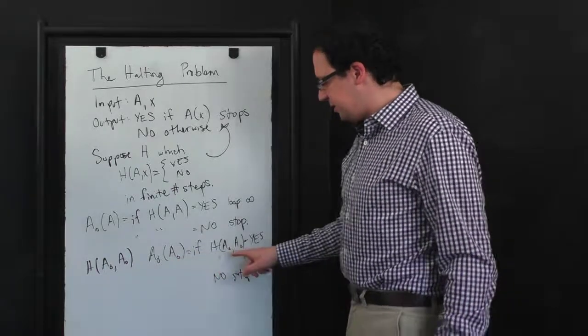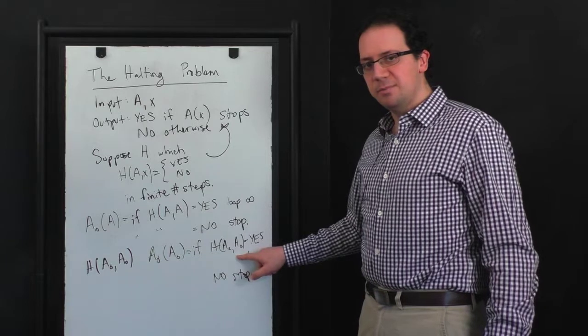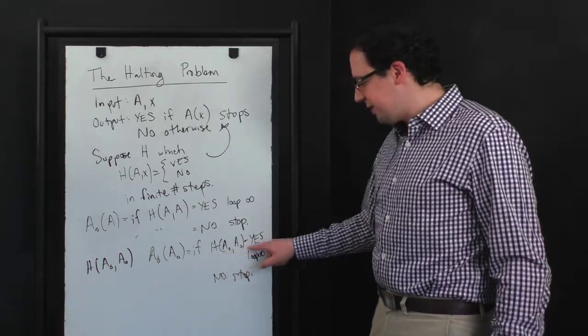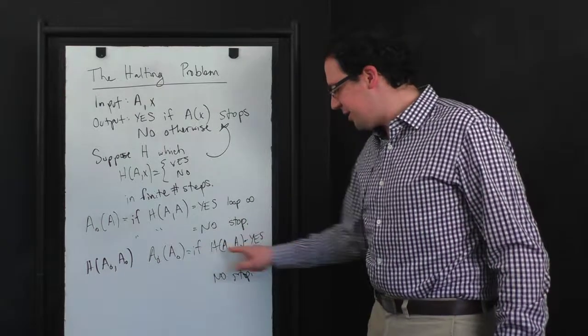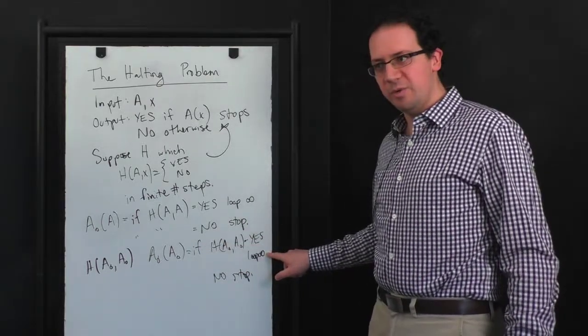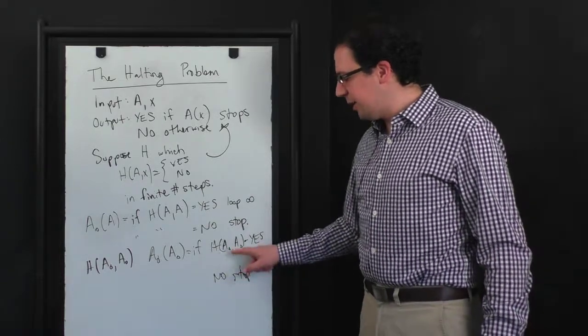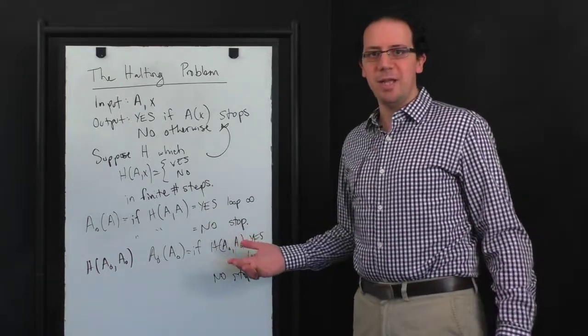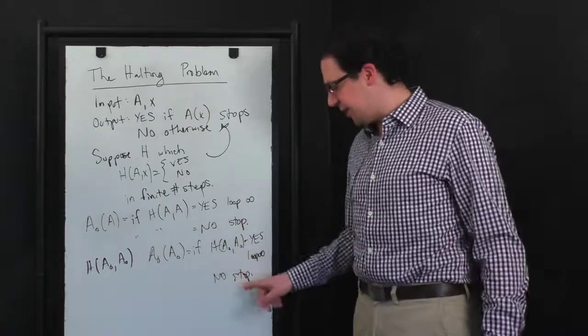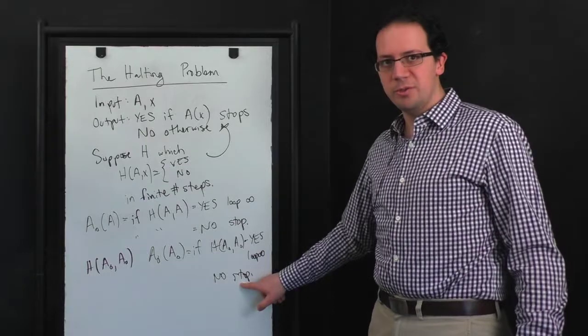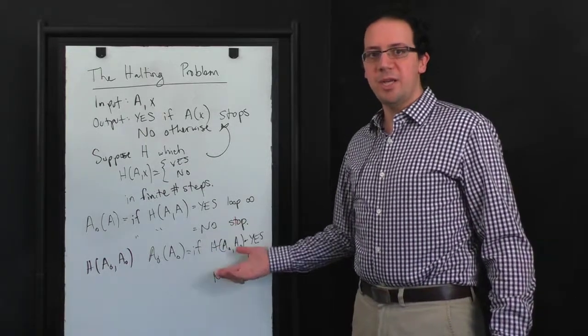So A0 on input A0 says if H of A0, A0, right? So H says that A0 should halt on input A0, but then A0 does exactly the opposite. It loops forever. And in the other scenario, if H of A0, A0 says no, then H is claiming that A0 actually doesn't halt on input A0, but then A0 halts. So whatever A0 does, H gets it wrong.